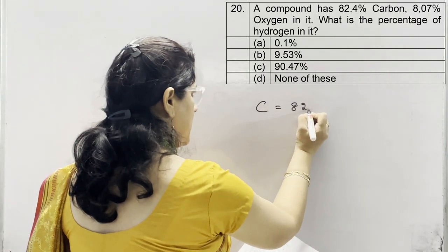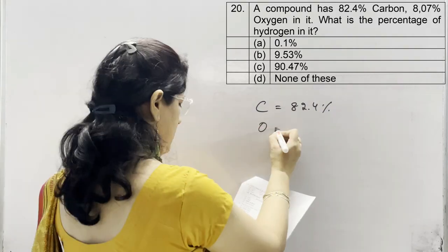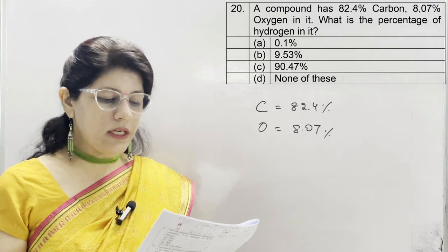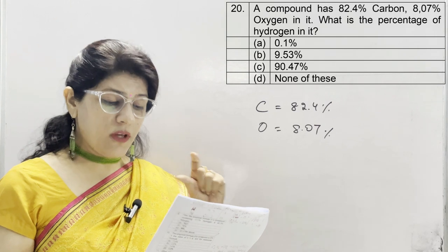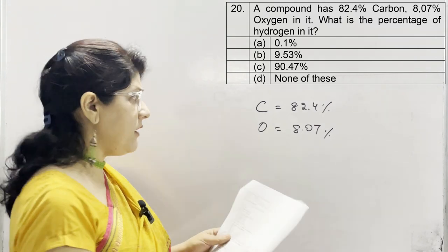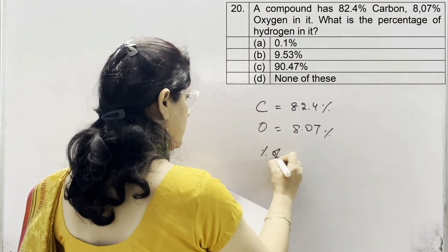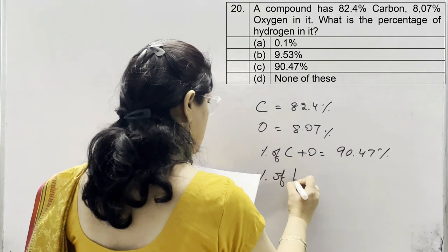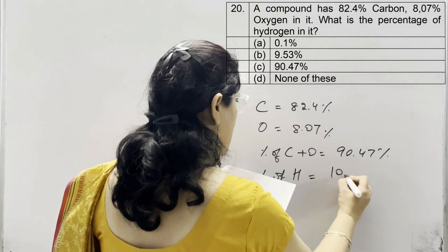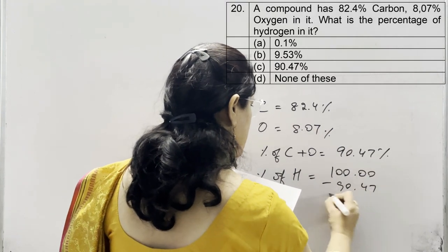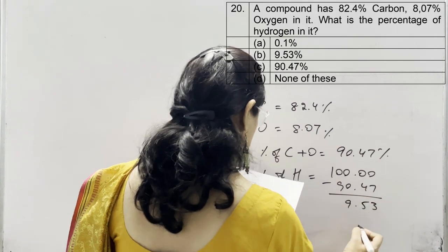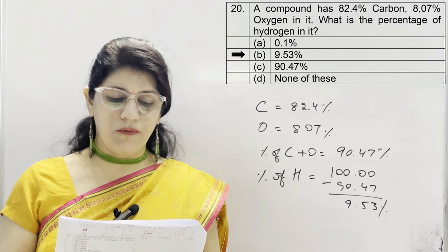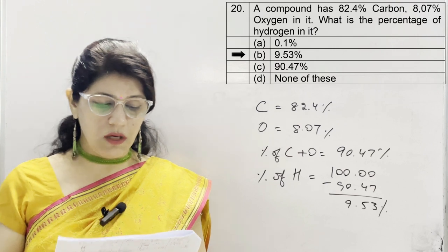In question 20, a compound has 82.4% carbon and 8.07% oxygen. What is the percentage of hydrogen? The sum of carbon and oxygen is 82.4 + 8.07 = 90.47%. So percentage of hydrogen = 100 − 90.47 = 9.53%. Options: A 0.1%, B 9.53%, C 90.47%, D none. Correct option is B, 9.53%.